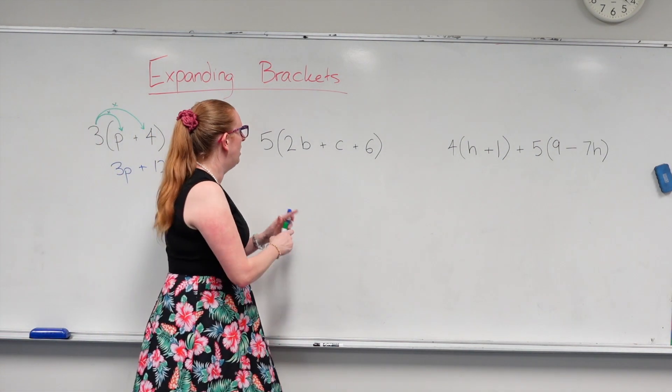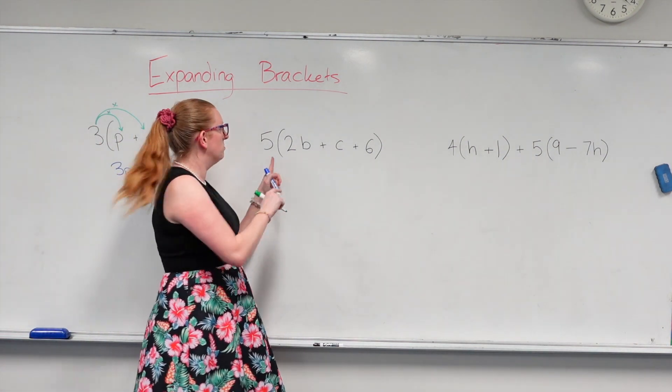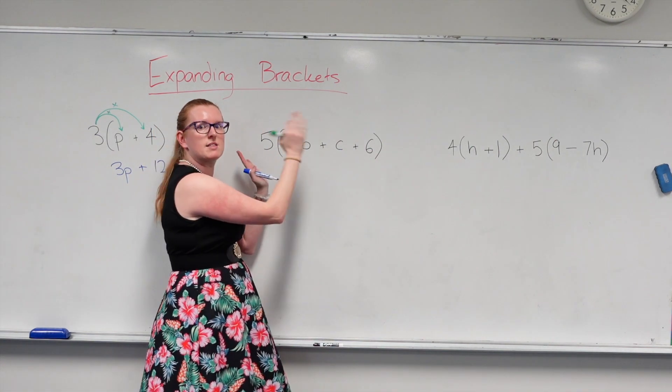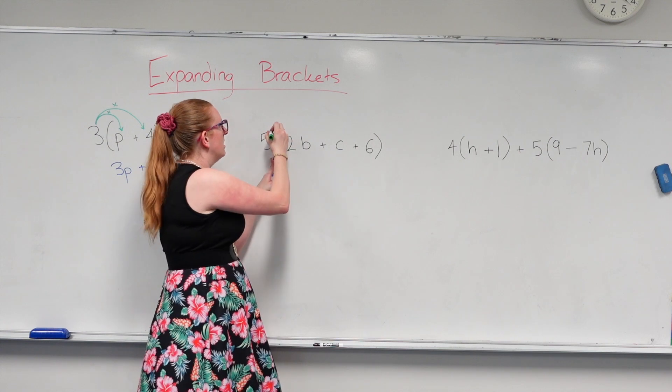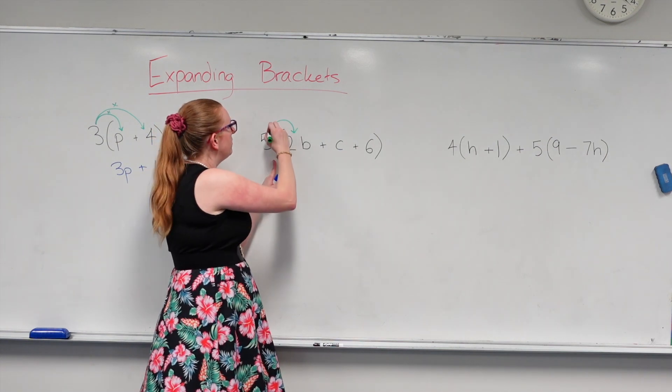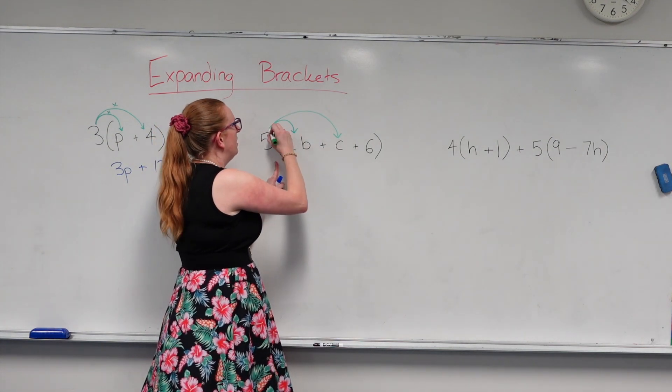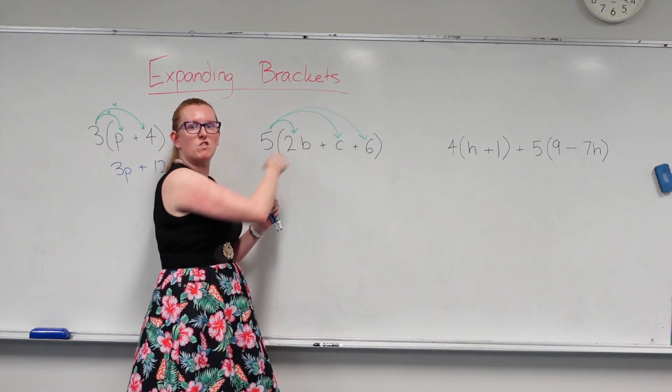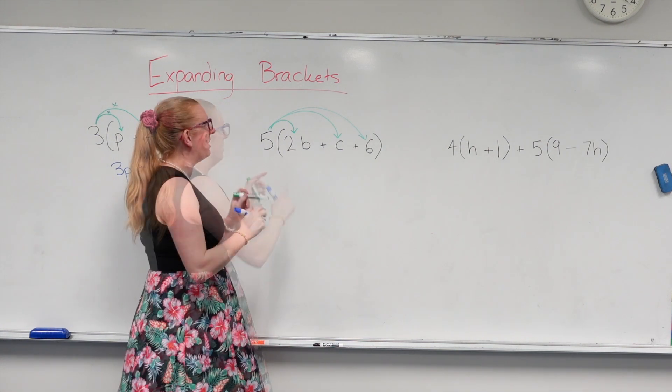Whereas over here, I have a 5 smooshed up against a bracket, which means everything in this set of brackets gets multiplied by 5. So I'm multiplying this by 5 and this by 5 and this by 5. So in this case, I'm doing three separate lots of multiplication.